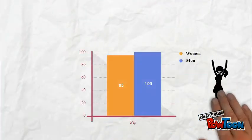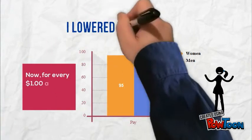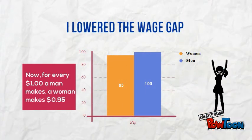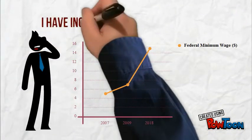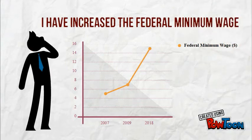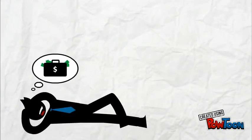This land was made for you and me. This land is your land. This land is my land. From California to the New York Island. From the Redwood Forest to the Gulf Stream water.